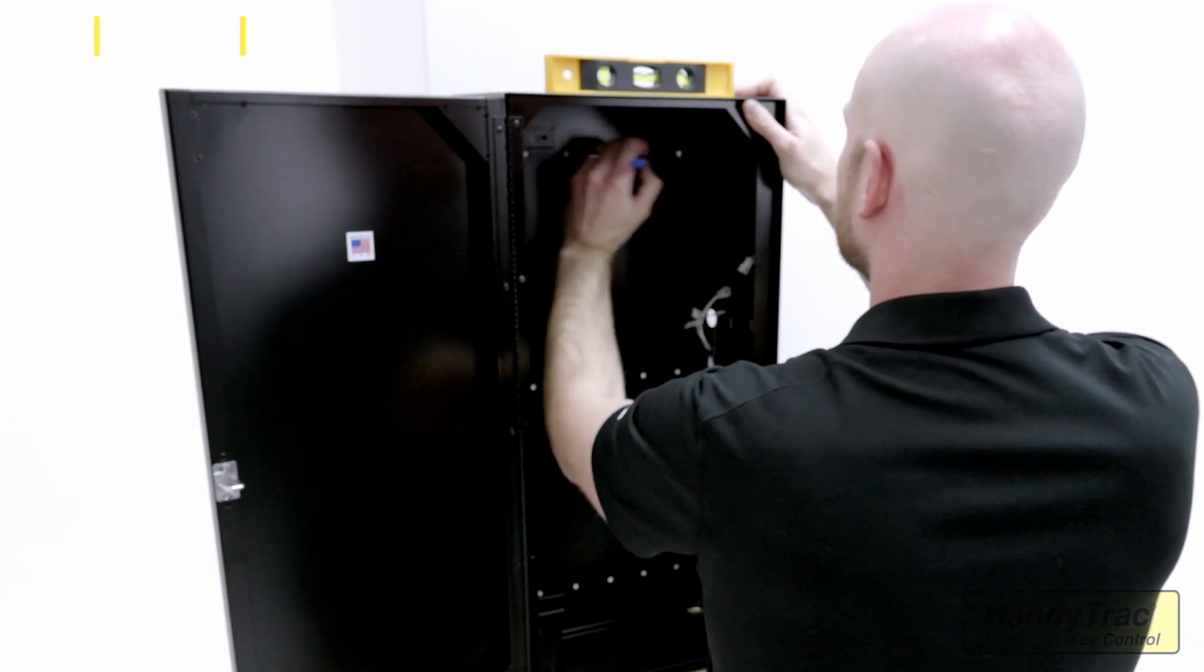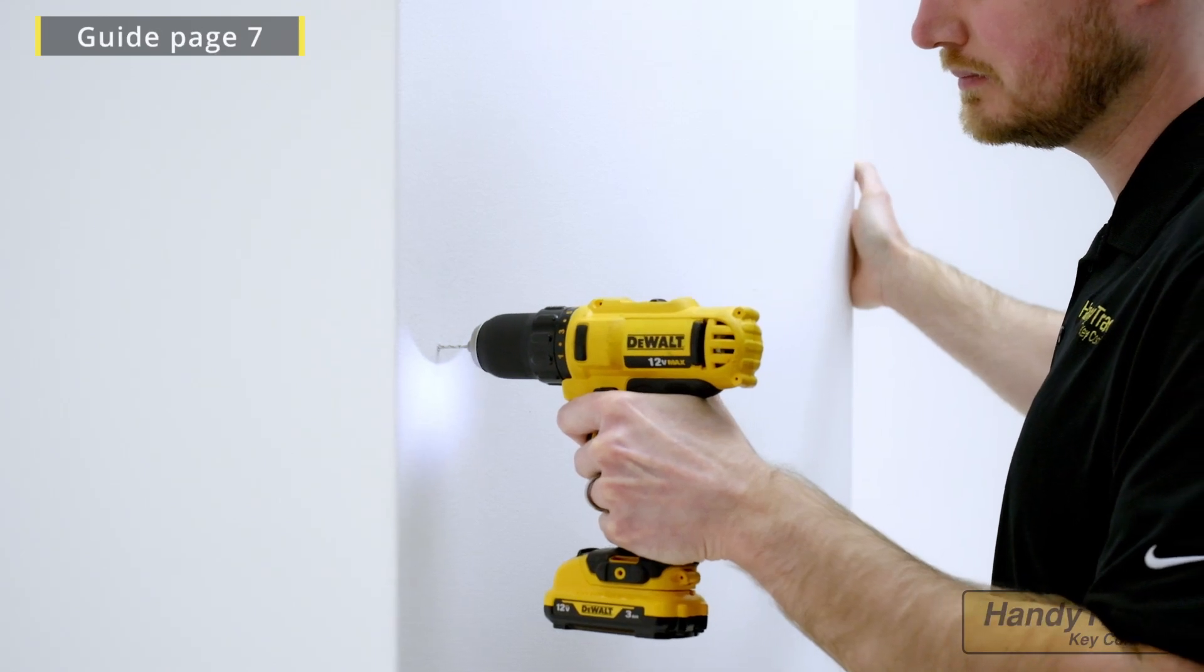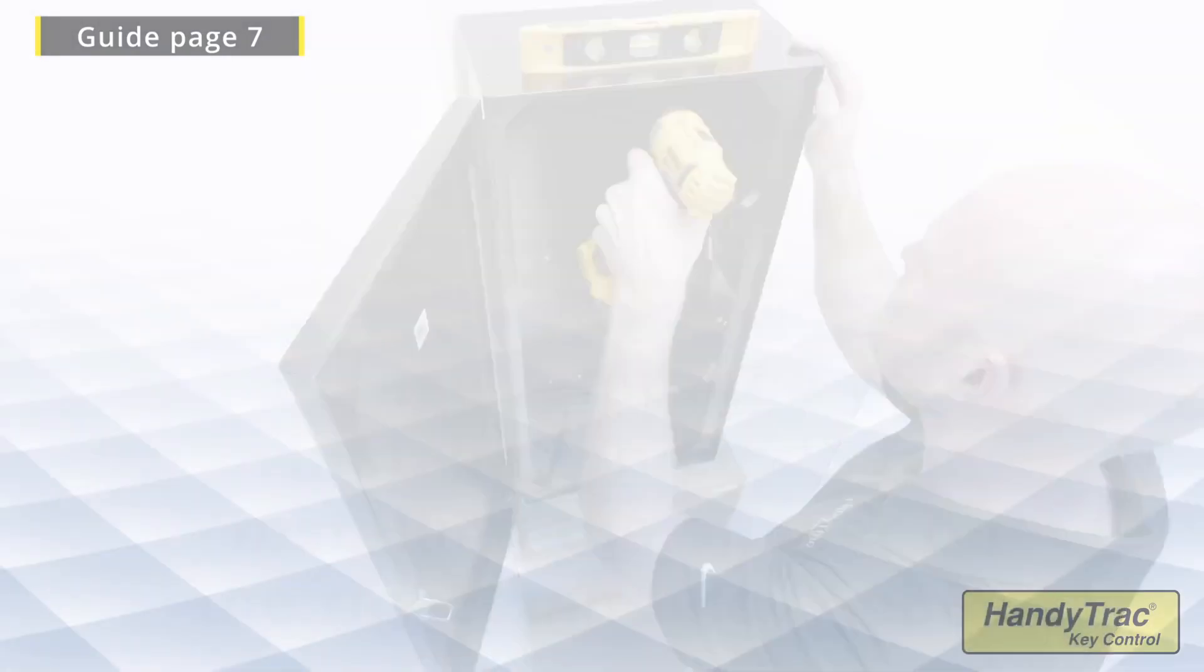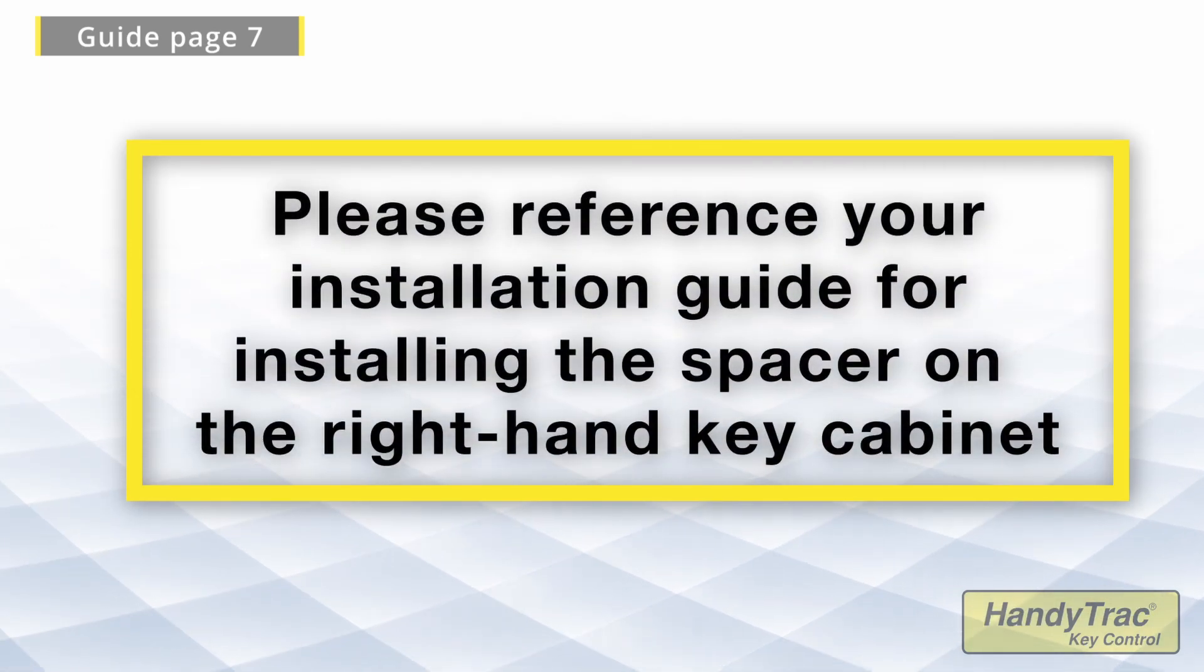If you have a double cabinet system, repeat the steps from mounting and connecting the second cabinet on the right-hand side of the control box. Please reference your installation guide for installing the spacer on the right-hand key cabinet.